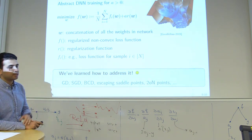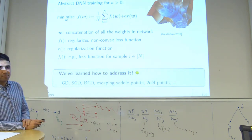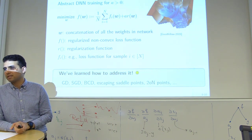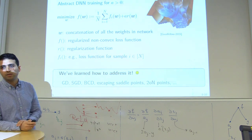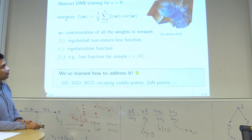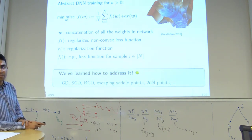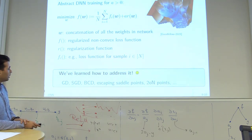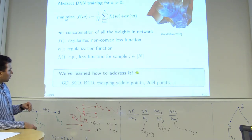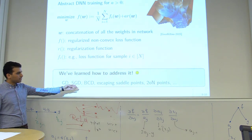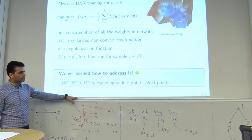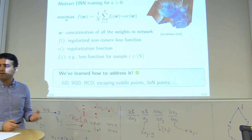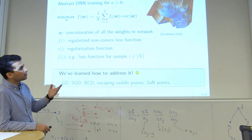The applicable solvers are gradient descent, stochastic gradient descent, block coordinate descent, and second-order methods targeting necessary optimality conditions. You have the knowledge to apply all of these to deep neural network training.